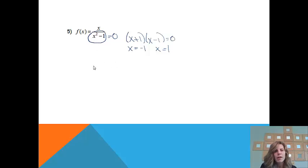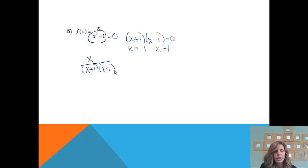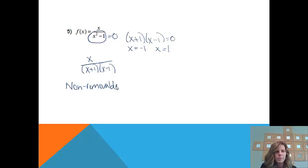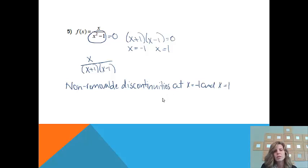To classify the discontinuities, I'll rewrite the function in factored form: x over (x + 1)(x − 1). If a discontinuity is removable, we should have something that cancels. There's no canceling going on in this problem, which means at both of these places — x = −1 and x = 1 — they are non-removable discontinuities. If we were to graph this, we would see two vertical asymptotes.